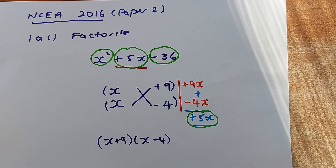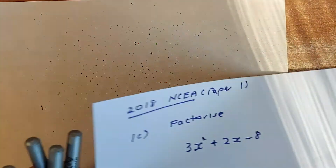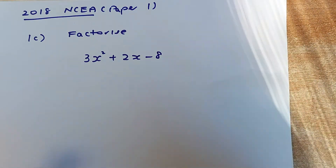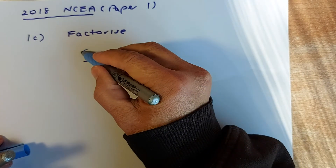That is how you factorize using the trial and error method. Now we are going to do a slightly more difficult example from the 2018 MCA exam: 3x² + 2x - 8. This is slightly different because now we have 3x² instead of x², so there are more possibilities. Step one: put it into blocks.